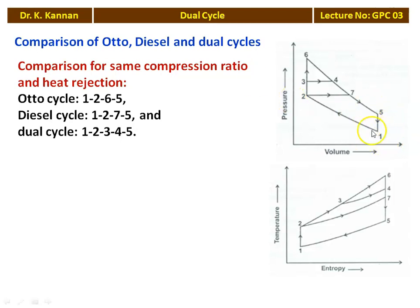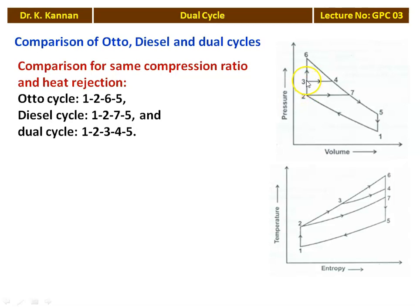The diesel cycle is 1-2-7-5-1: isentropic compression, constant pressure heat addition, isentropic expansion, constant volume heat rejection. The dual cycle is 1-2-3-4-5-1: isentropic compression, 2-3 constant volume heat addition, 3-4 constant pressure heat addition, 4-5 isentropic expansion. In the corresponding temperature-entropy diagram, 1-2 is common for all cycles; for Otto cycle 2-6-5, for diesel cycle 2-7-5, and for dual cycle 2-3-4-5.